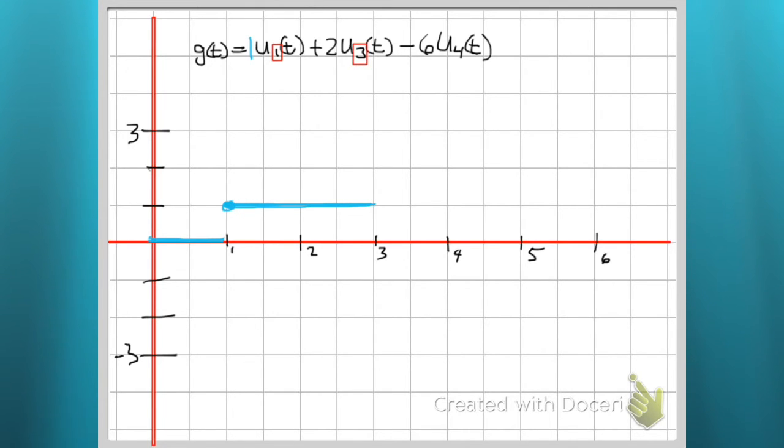So once we get to our action number 3, boom! We're going to add 2 units. 2 units to 1. So that's why I'm up there at 3 from 3 to 4.